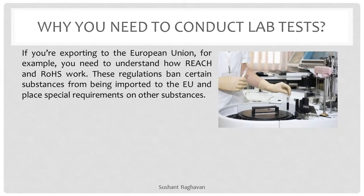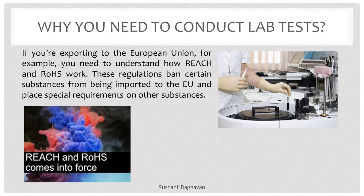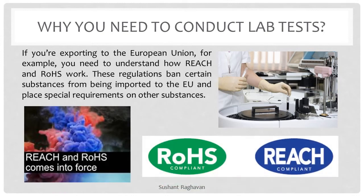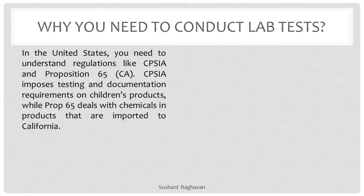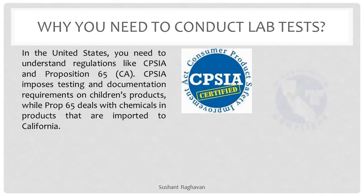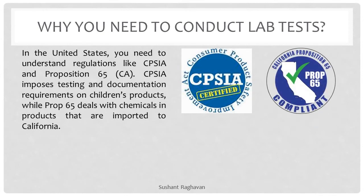If you are exporting to the European Union, for example, you need to understand how REACH and RoHS work. These regulations ban certain substances from being imported to the EU and place special requirements on other substances. In the United States, you need to understand regulations like CPSIA and Prop 65. CPSIA imposes testing and documentation requirements on children's products, while Prop 65 deals with chemicals in products that are imported to California.